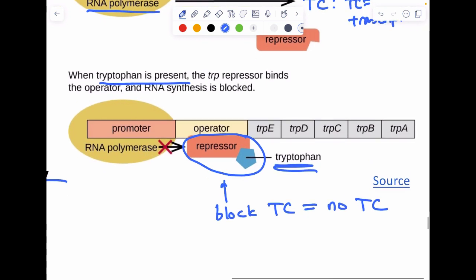And the result is we get no transcription. Why? We have tryptophan. So why make it? Which totally makes sense.